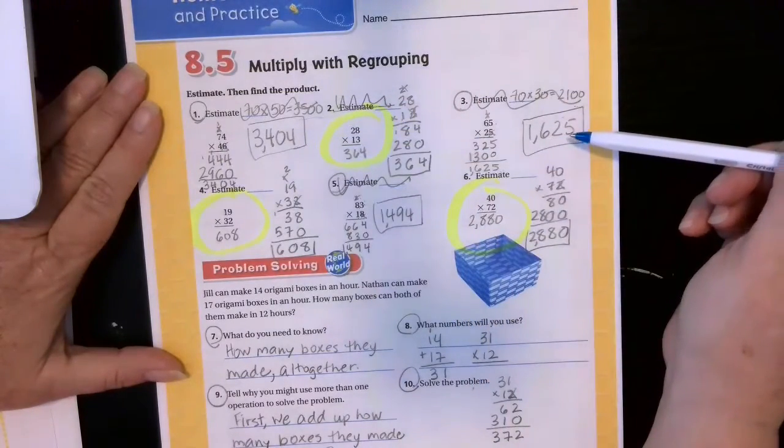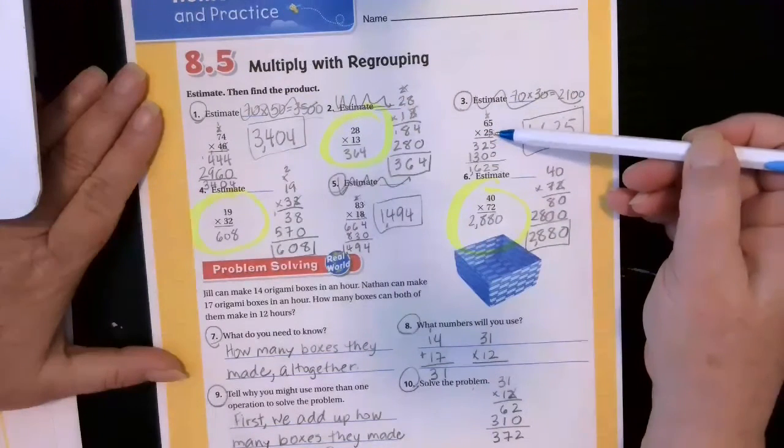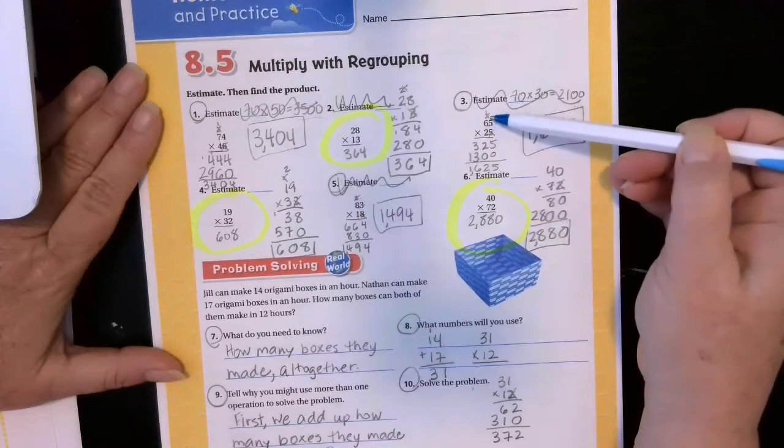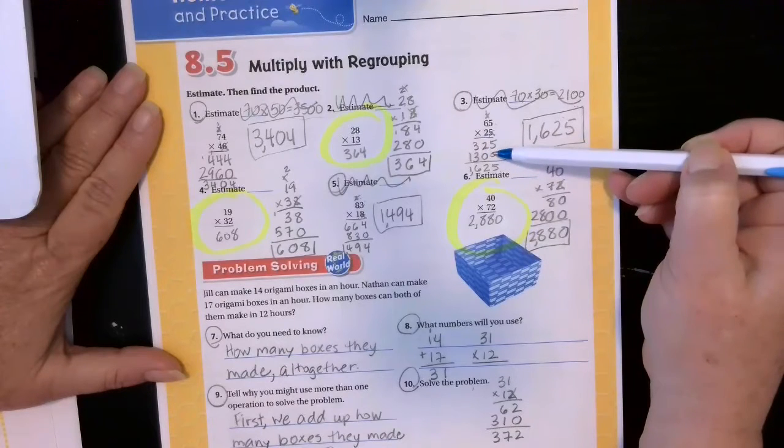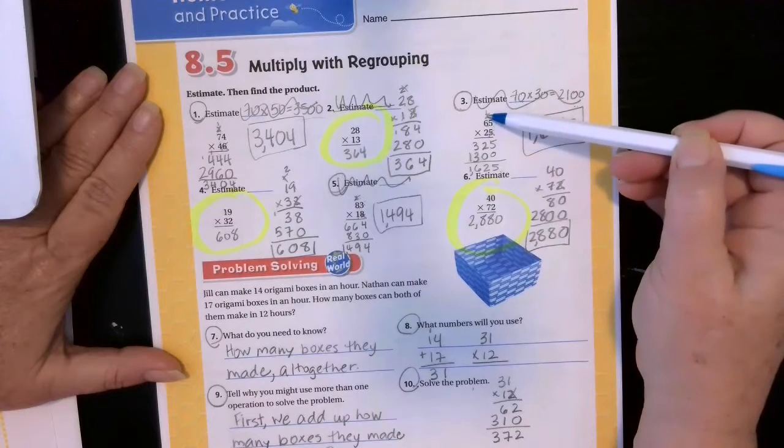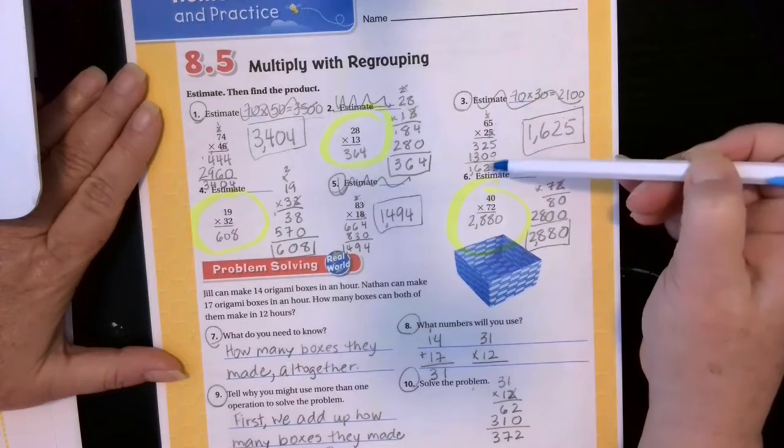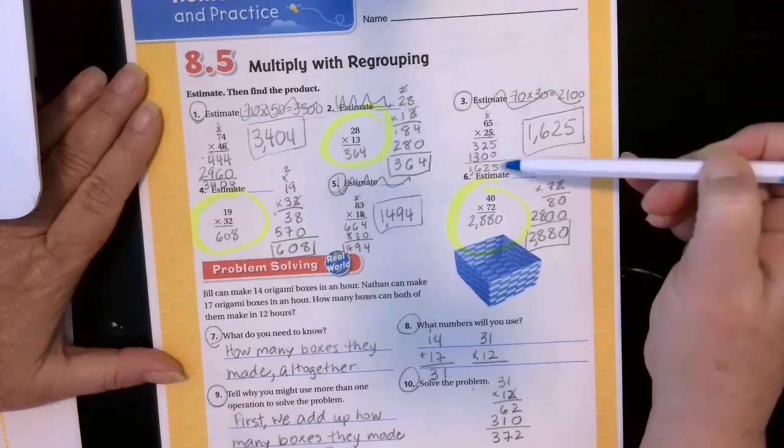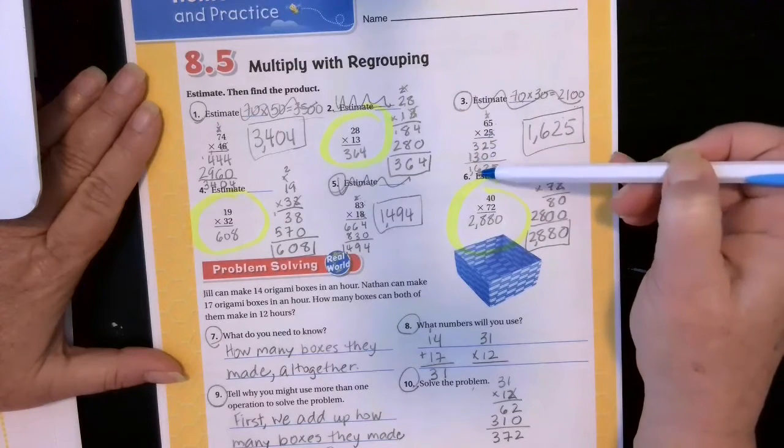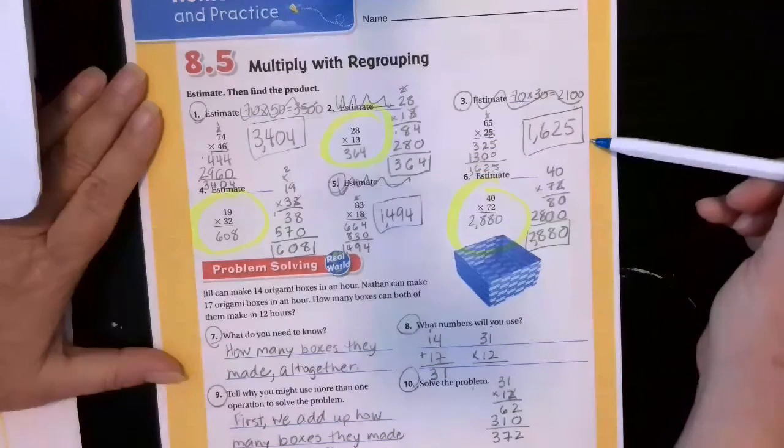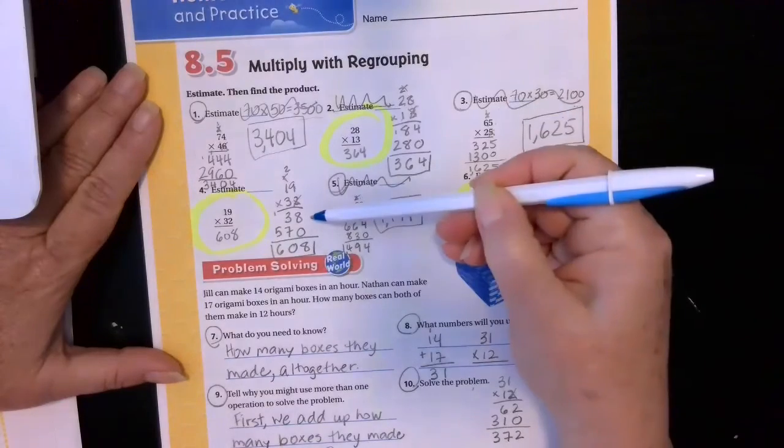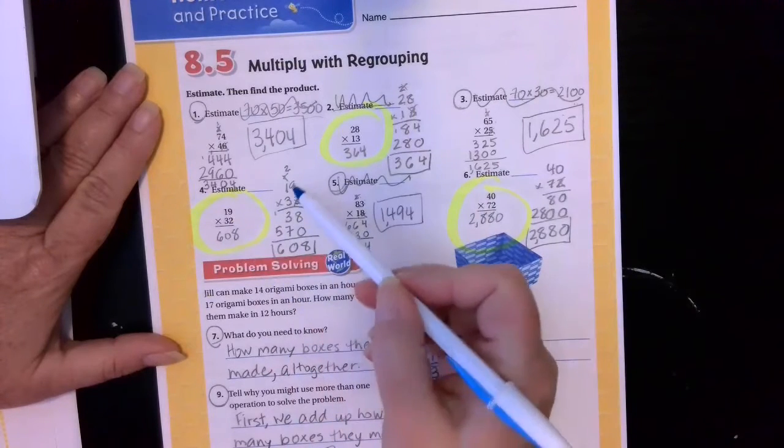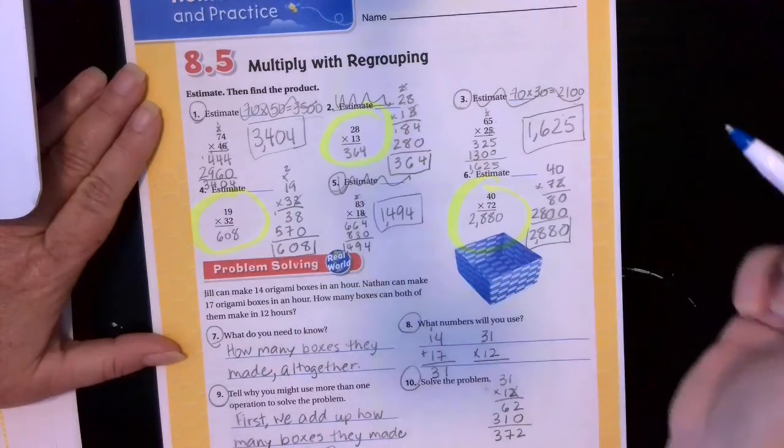And then on question number 3, 65 times 25. 5 times 5 is 25. Put down my 5 and carry my 2. 5 times 6 is 30. Plus 2 is 32. Put down my 0 because I'm multiplying by the 10s place. Cross everything that has to do with my 1s place out. 2 times 5 is 10. Put down my 0, carry my 1. 2 times 6 is 12. Plus 1 is 13. Add them up. 5 plus 0 is 5. 2 plus 0 is 2. 3 plus 3 is 6. Nothing plus 1 is 1. So we got 1,625. I was like, that isn't right. I just write big. So I decided I was going to write it out over here instead of being squishy, but that was homework anyway.